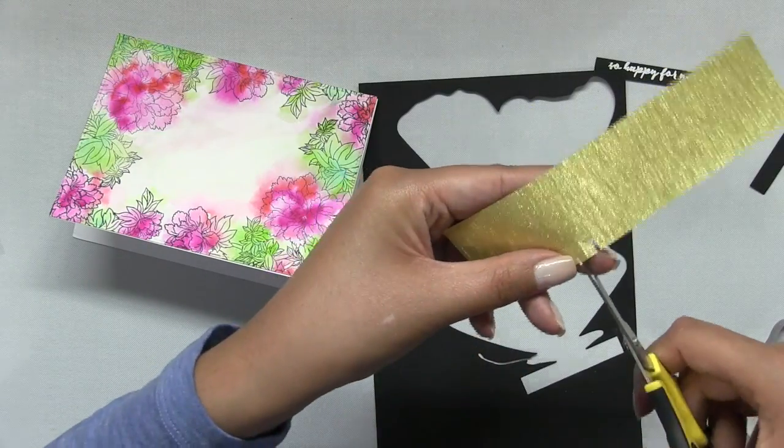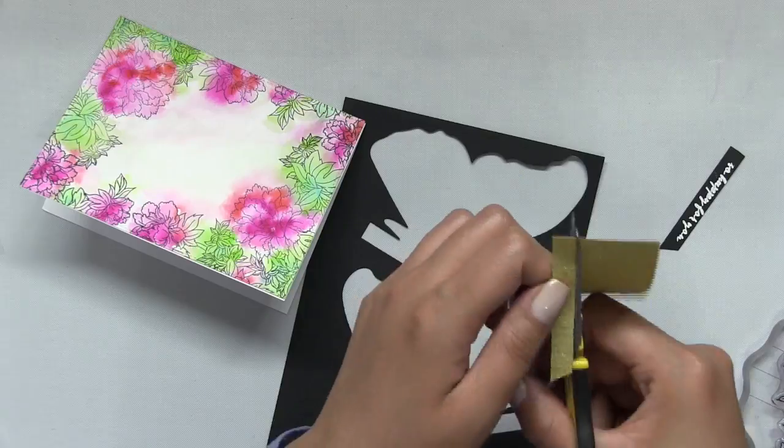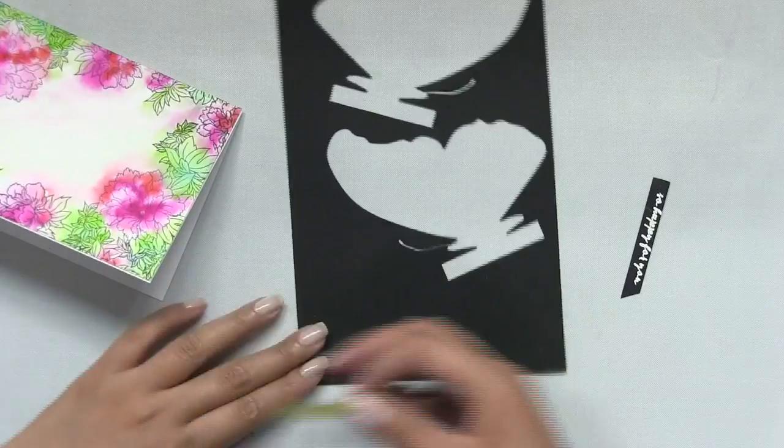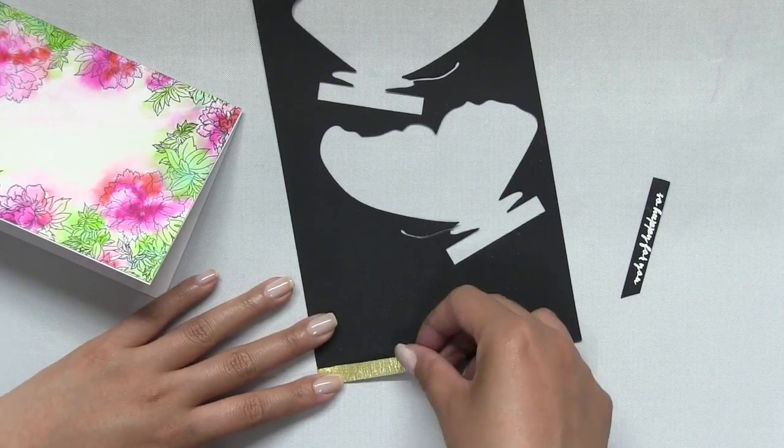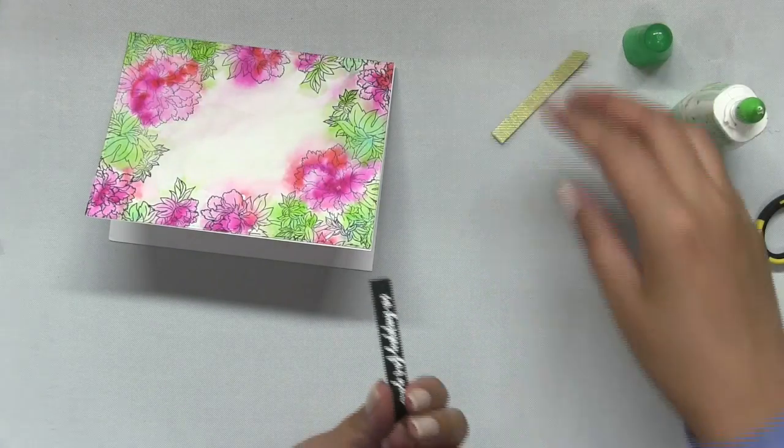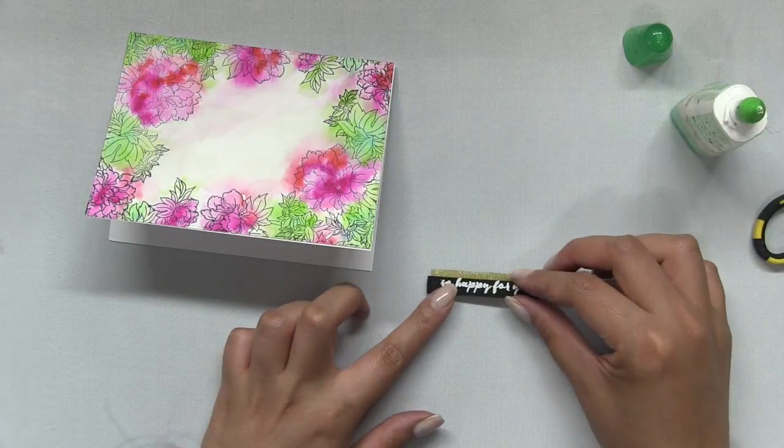Then I white heat embossed my sentiment from the same nesting peony set onto some black cardstock, and then I created a coordinating gold strip. This is going to go behind my black sentiment strip. It's just going to be a nice gold accent.